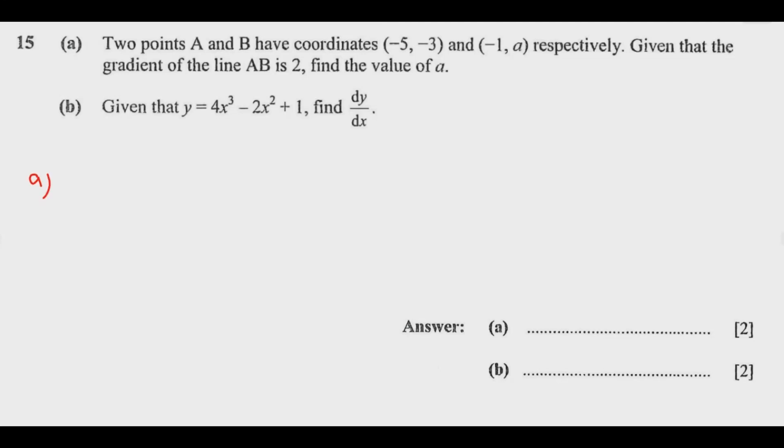So to answer question (a), what you are told is if you have these two points—this is A, this is B—then this is A at (-5, -3), and this is B at (-1, a). This slope, the change in y over the change in x, is equal to 2, which is the gradient. So if that's the case, what is the value of a? We shall call this one x₁, this will be y₁, this will be x₂, and this will be y₂.